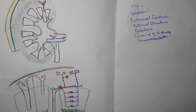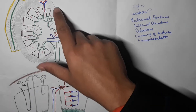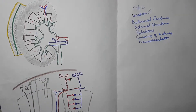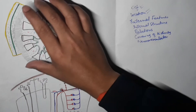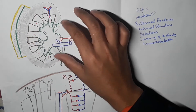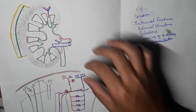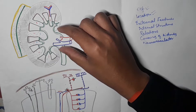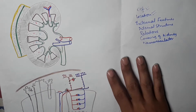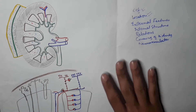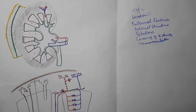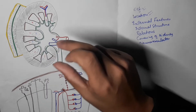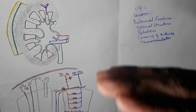Regarding the borders: the lateral border is convex in shape, while the medial border is concave. The medial border has a depression in its center called the hilum of the kidney.